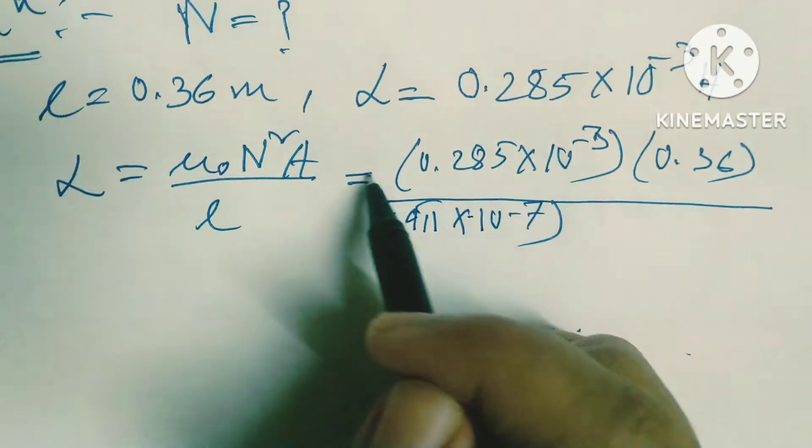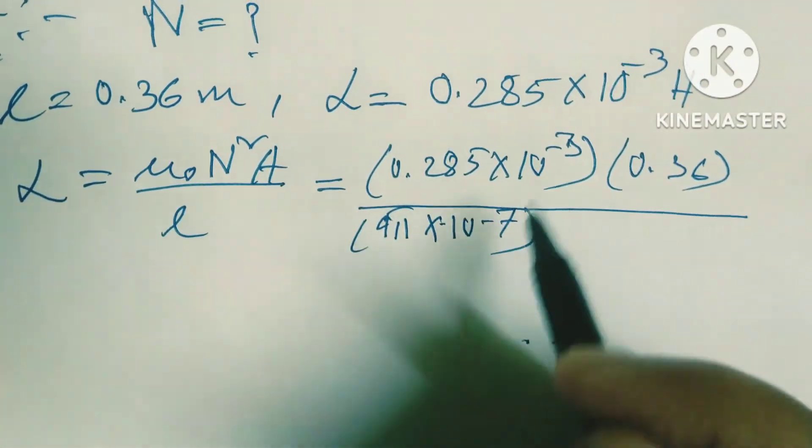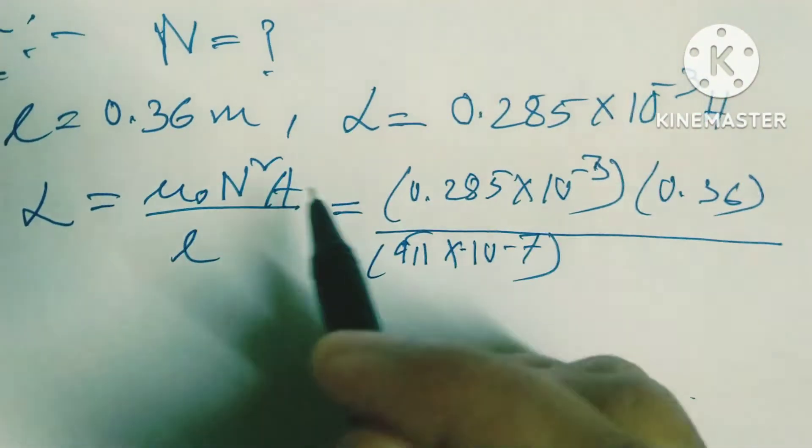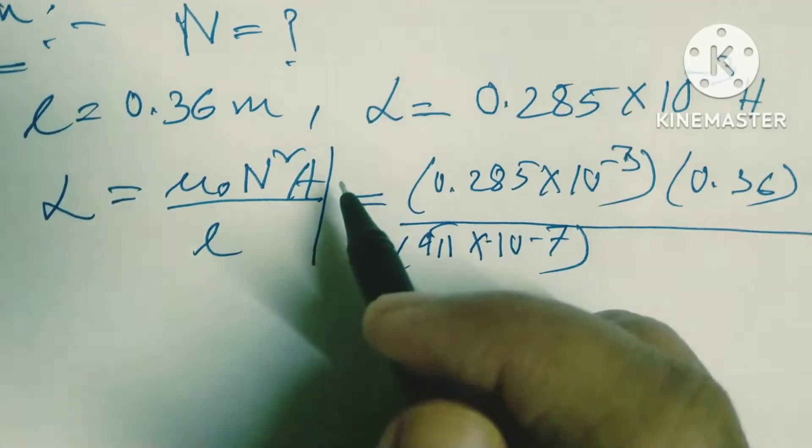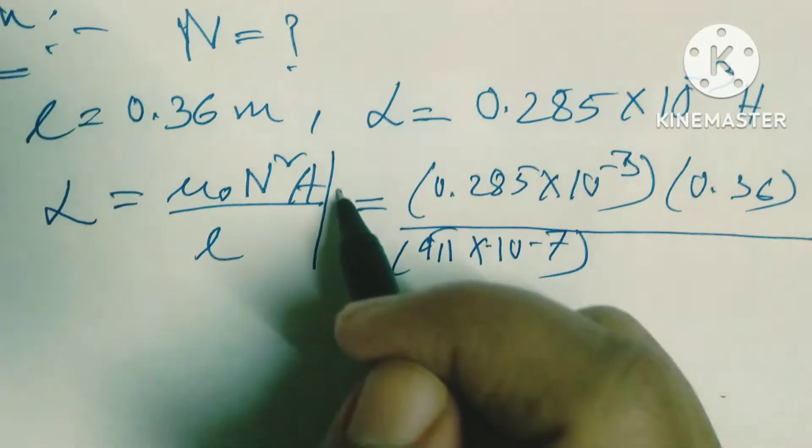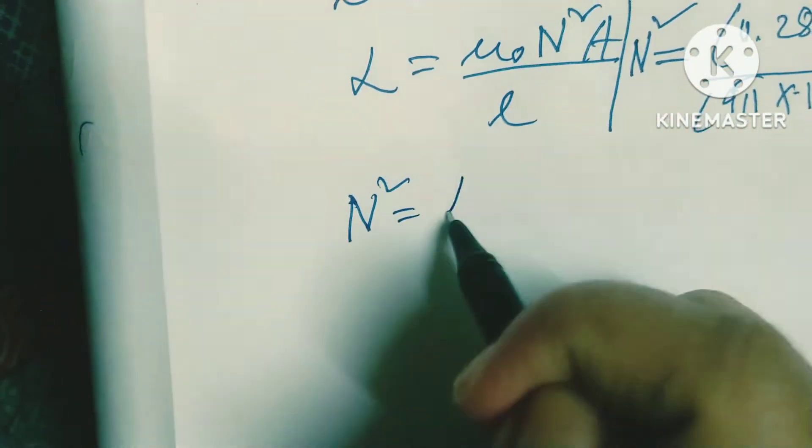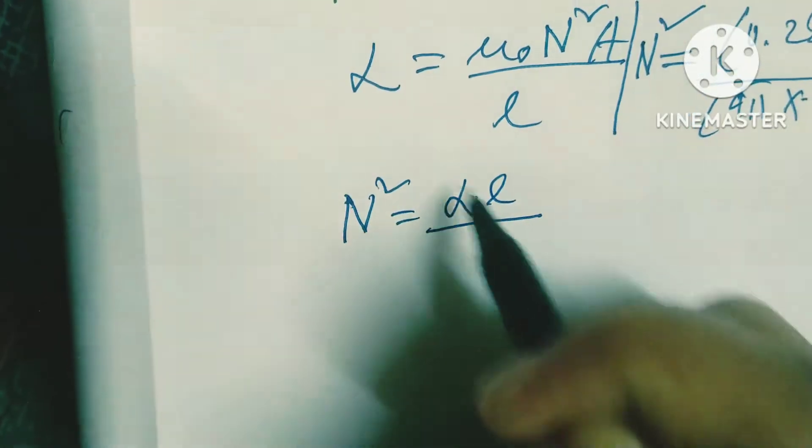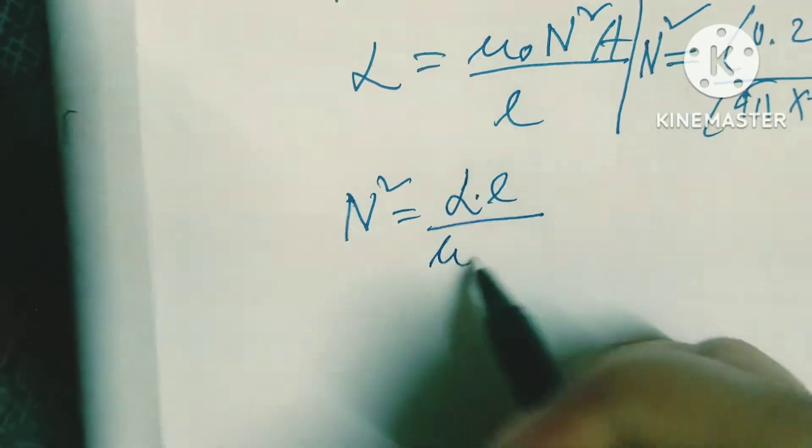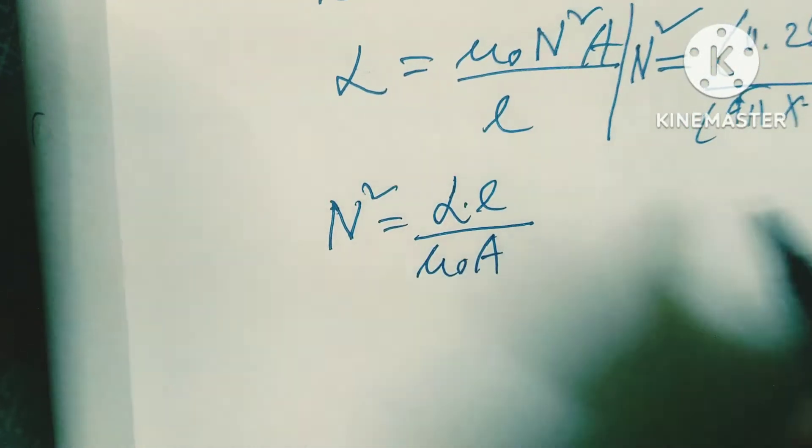Now let me calculate. One minute... I need to find N². Wait, one step I missed: L times small l, where capital L is the self-inductance.